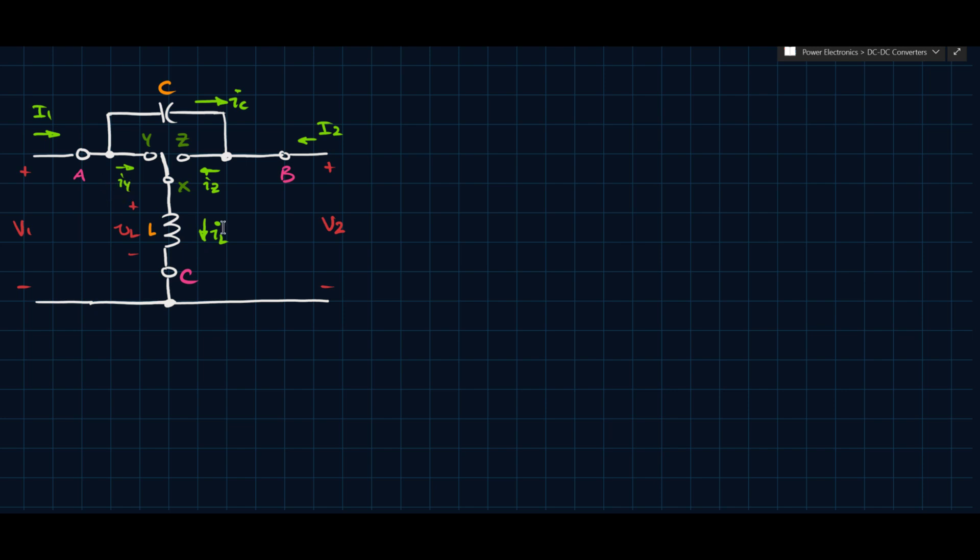Okay, and so this is the indirect converter. This is another sort of class of converters. And we can jump right into the analysis, and we can kind of do the same thing we did in the previous case. So let's imagine for a second that S X Y is closed for a very long time, okay?